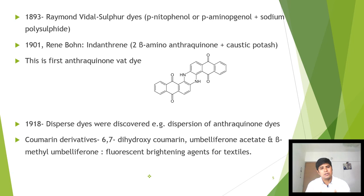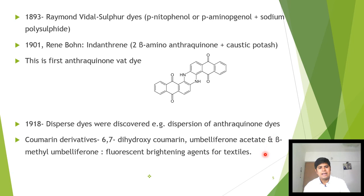Later, in 1918, disperse dyes were discovered — for example, disperse anthraquinone dyes, prepared as dispersions in solution. Finally, many coumarin derivatives such as 6,7-dihydroxycoumarin, umbelliferone acetate, and beta-methylumbelliferone were developed, which are used as fluorescent brightening agents for textiles. This concludes our first chapter: introduction to dye stuff industry.